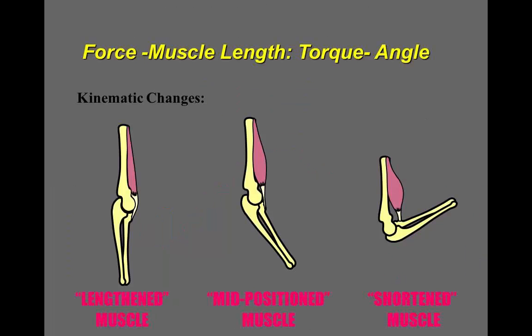This force-length relationship at the sarcomere level actually holds true at the muscle level in the human body. And at that point, we call it the torque-angle relationship because as you move your joint through different angles from elbow extension to elbow flexion, the muscle length changes and thus changes its force production capabilities and then results in more or less torque generation at the joint.